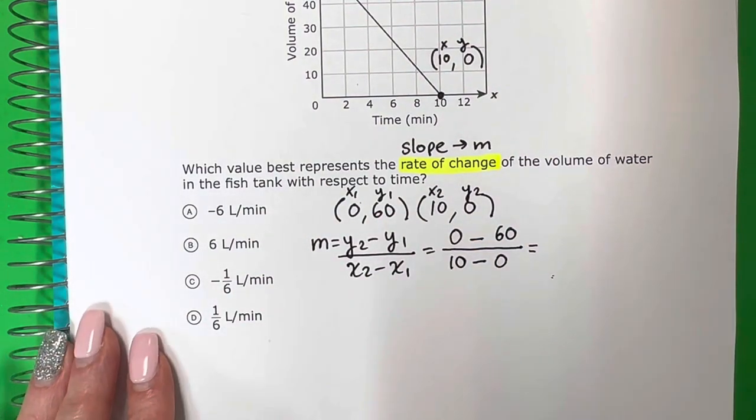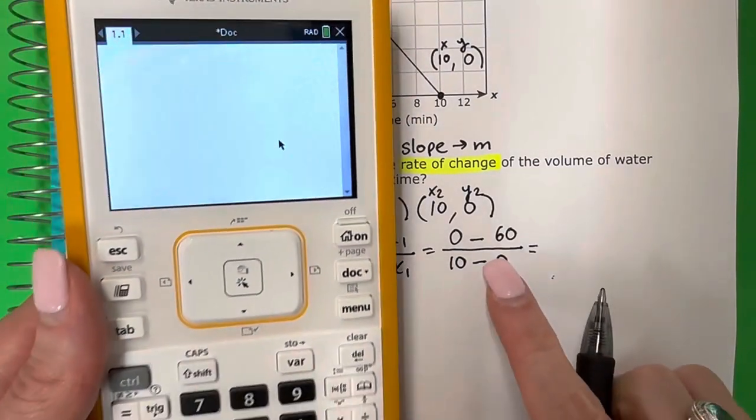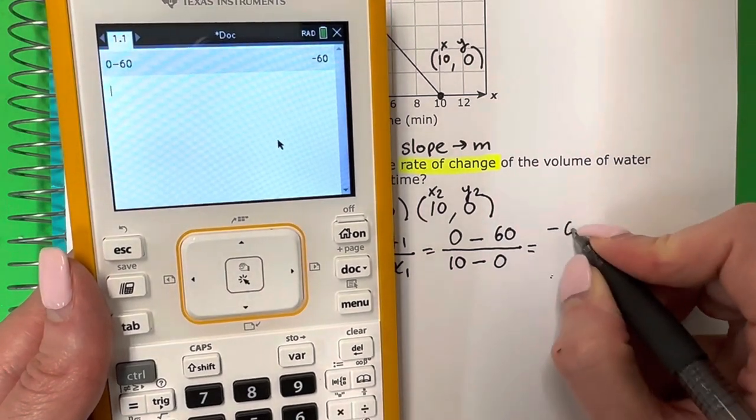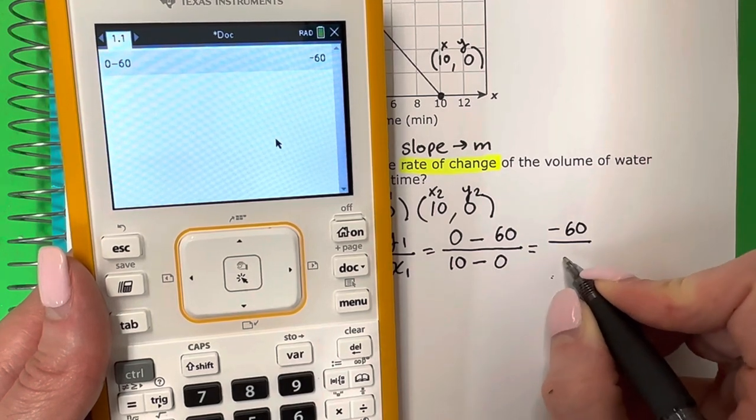Okay, so let's put these in the calculator. First you're going to put what is up on top in the calculator, what is in the numerator. So let me grab my calculator. 0 minus 60. That is negative 60. Divide it by. 10 minus 0. That is 10.